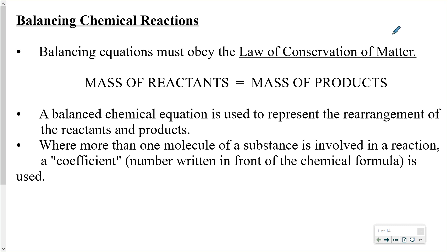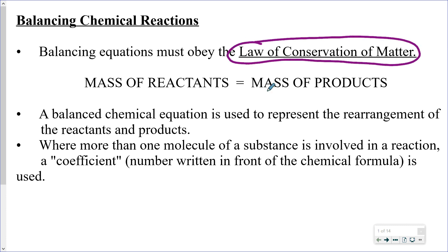Balancing reactions or equations must follow the law of conservation of energy. What does that more or less mean? We talked in general terms about chemical reactions. Whatever you have for the reactants, the mass of those combined reactants has to equal the mass of the products — that follows the law of conservation of matter. The reason why we balance a chemical reaction is to ensure that this is the case. The chemical equation represents the rearrangement of atoms in the products versus the reactants, ensuring we meet the laws of conservation of matter.